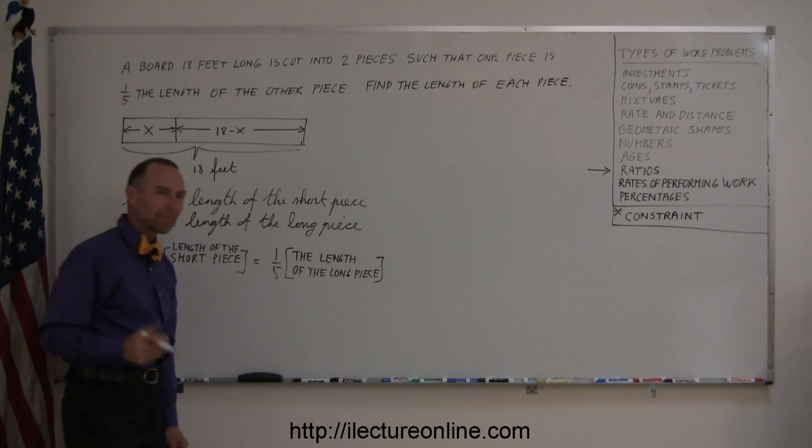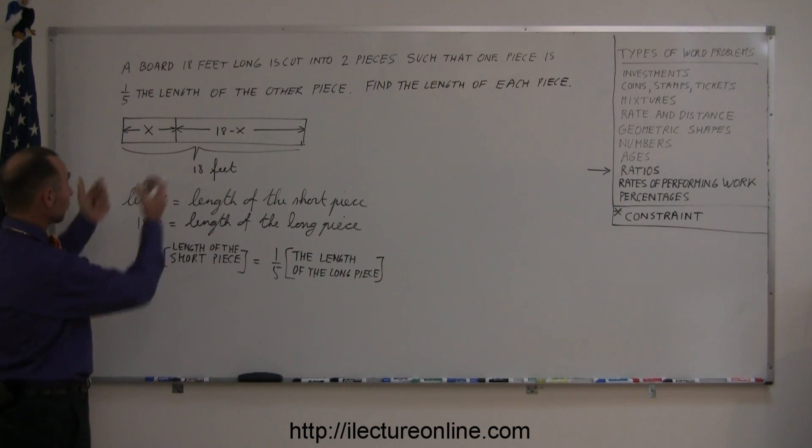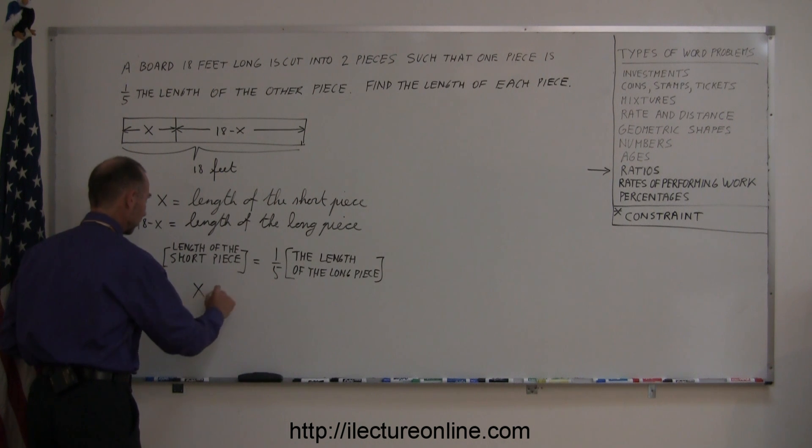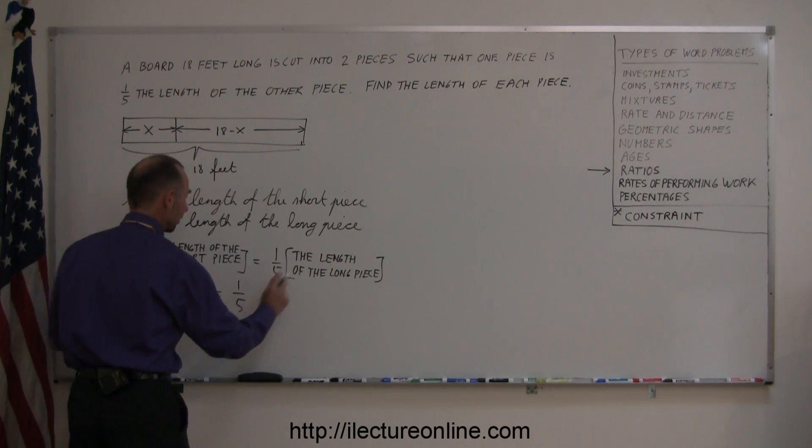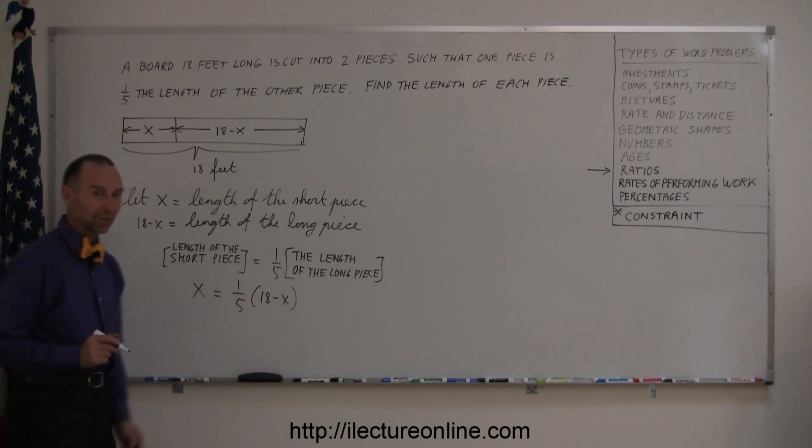So you can see that mathematical equations are basically just mathematical translations of an English sentence. So if you now represent x for the length of the short piece, then x is equal to one-fifth the length of the long piece, and the long piece is 18 minus x. And now we can go ahead and solve this problem.